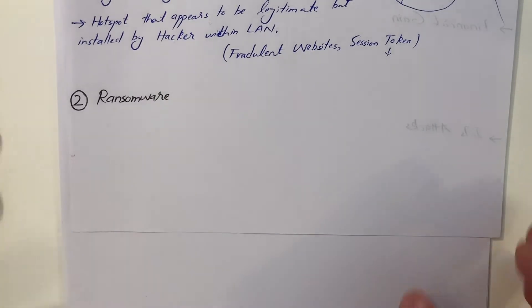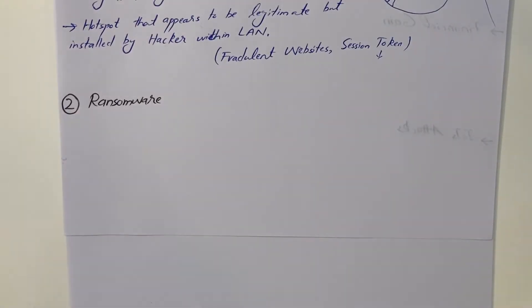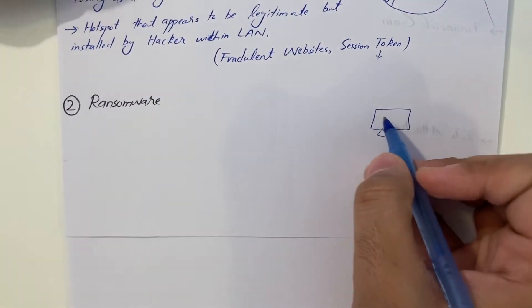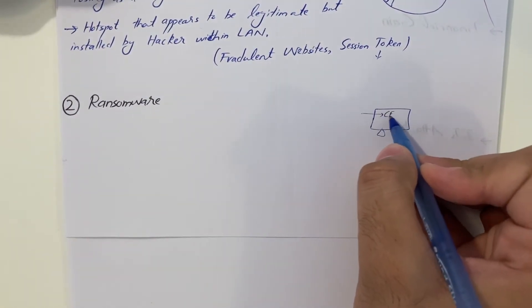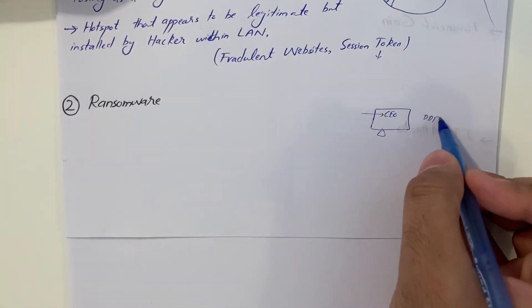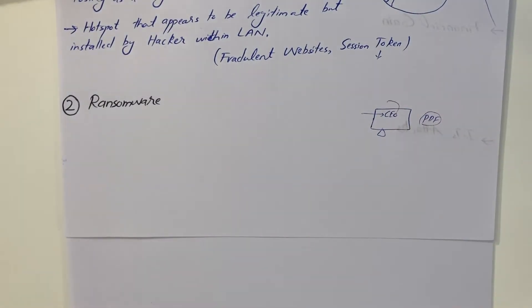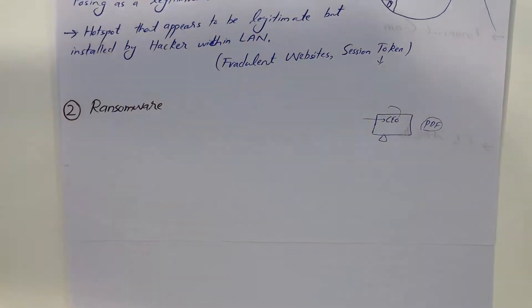Next is the ransomware attack. Ransomware attack is basically something like, let's say you got an email. This is your computer. You open your inbox and you got an email from CEO and it says, please download this PDF file. Once you download that PDF file, it may lock down your computer if there is a ransomware attack in it. You got your computer completely locked down. Now you saw a message coming on your screen. If you want to get back your data, you got 72 hours. Please give us this amount. That is called ransomware attack.